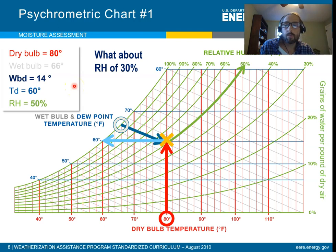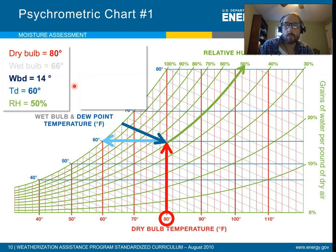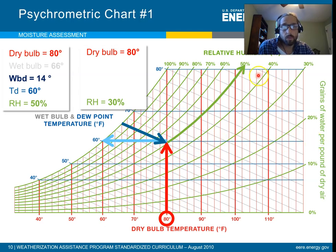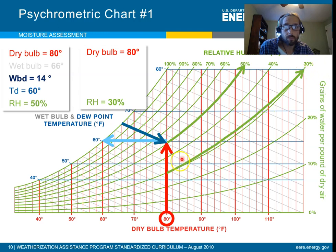What if the relative humidity were 30%? Let's say the dry bulb is still 80 degrees but now we have a relative humidity of 30%. How does that change all the other values? It's just like algebra — if you have two variables, you can figure out the others. You just need any two of these: absolute humidity, relative humidity, dew point, wet bulb, dry bulb. So we find 80 on the dry bulb, follow it up to the 30% relative humidity line. Now see if you can figure out the wet bulb and the dew point.